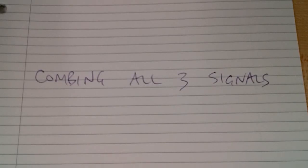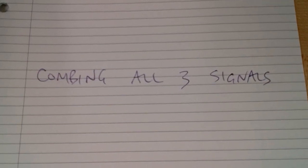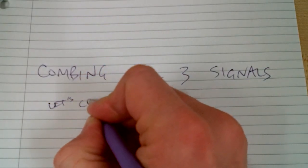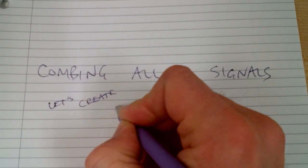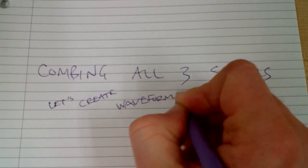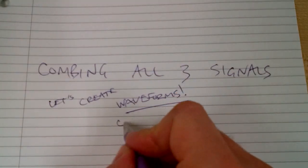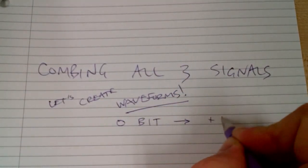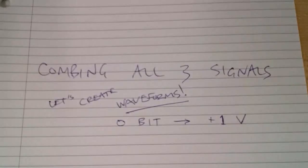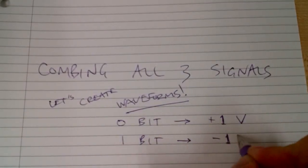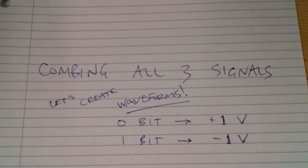So we have three users, each with its own data, and each user's signal has been spread with a unique code. Now we want to combine all three signals by creating waveforms. I've decided to represent a zero bit as plus one volt and a one bit as minus one volt.